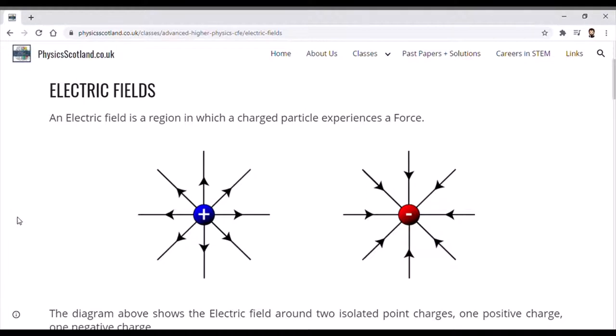Likewise, if we put a positive test charge next to our negative charge, they would experience attraction, and the arrows show that by showing movement in towards our negative charge.